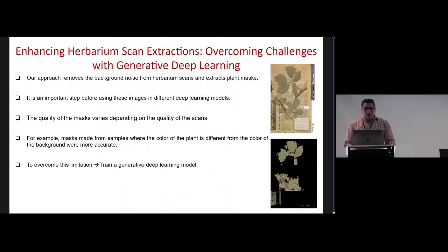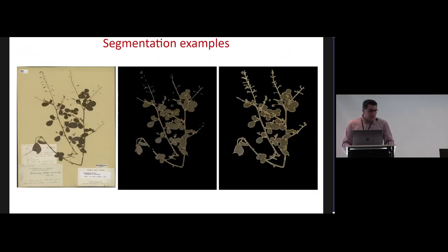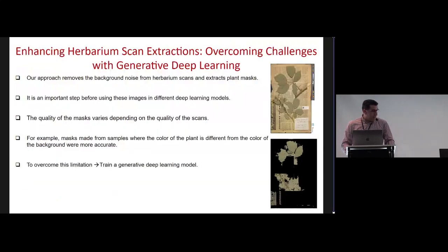So we have an approach that removes the background noise from herbarium scans and extracts plant masks — an important step before using them in different deep learning models. We noticed that the quality of extraction varies depending on the quality of the scans, the condition of the specimen, and the paper used. Extractions from samples where the plant color differs from the background color were more accurate than those where the plant and background colors are close. To overcome these limitations, we use deep learning generative models.